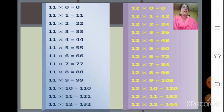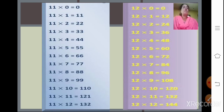Table of 12: 12 zeros are 0, 12 ones are 12, 12 twos are 24, 12 threes are 36, 12 fours are 48, 12 fives are 60, 12 sixes are 72, 12 sevens are 84, 12 eights are 96, 12 nines are 108, 12 tens are 120, 12 elevens are 132, and 12 twelves are 144.